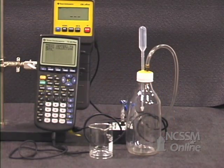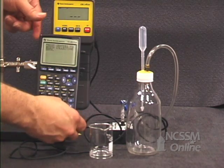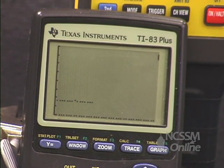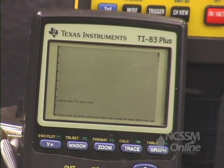I'm going to start the calculator and CBL and record a few pressure values to establish the initial pressure in the bottle. We've collected a few pressure points to establish the initial pressure. It's close to one atmosphere.